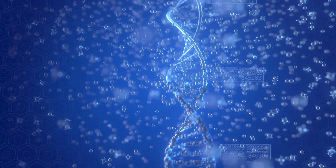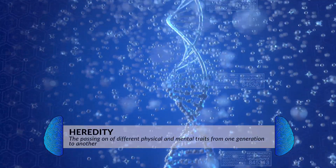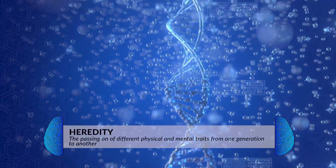Now you might be asking yourself, what does this topic even mean — Interaction of Heredity and Environment? Heredity is the passing on of different physical and mental traits from one generation to another. So when we're talking about heredity, we're talking about genetics — characteristics and traits of people and animals they're born with. Environment, on the other hand, is talking about where that species was raised, what resources were available, and how they were treated.